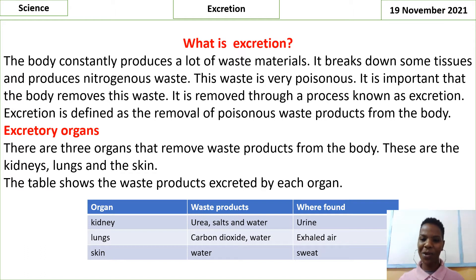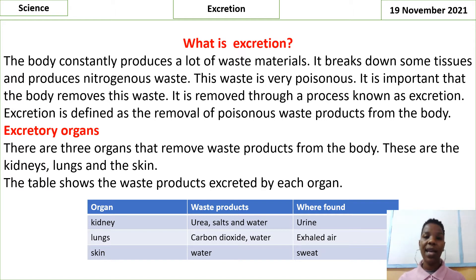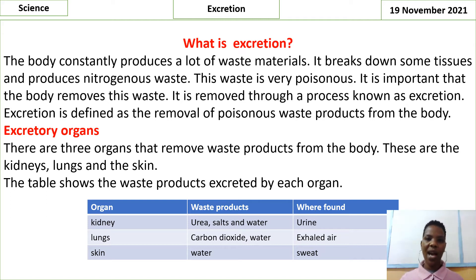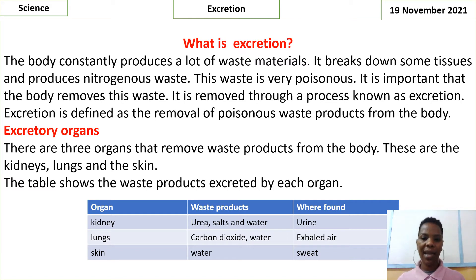Let's move on to the excretory organs. These are the three organs that remove waste products from the body — the kidneys, lungs and the skin. The table shows the waste products excreted by each organ. First, we have the kidney; waste products are urea, salt and water, found in the urine. Then we have the lungs; waste products are carbon dioxide and water, found in the exhaled air. Then we have the skin; waste product is water, found in sweat.